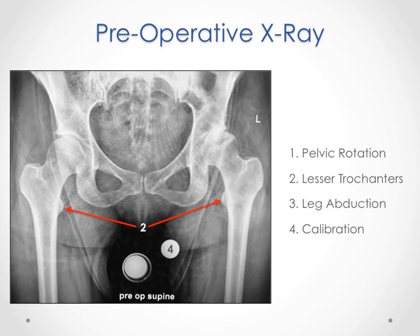The first thing that we do is we obtain a level and symmetric x-ray of the pelvis. This x-ray is taken once the patient is positioned on the operating table. This provides the basis for accurate measurements and an individualized reconstructive plan. And there are four main factors that are considered when taking this radiograph.